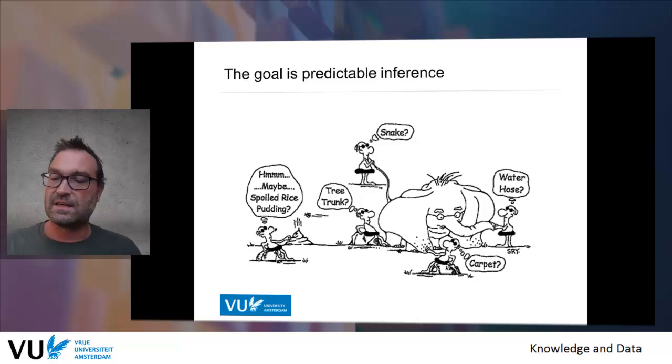Predictable inference in practice means you have a piece of data, you send it to someone else, and that person can derive the same conclusions from your data as you did. This is only possible if you give enough meta-information, enough knowledge with your data, so that other people can reuse it.